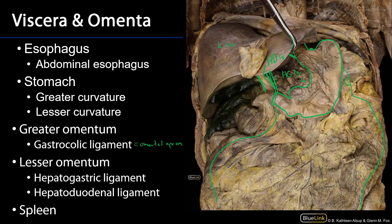We can also see just peeking out here in the left hypochondriac region, the spleen.